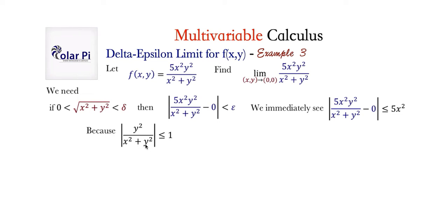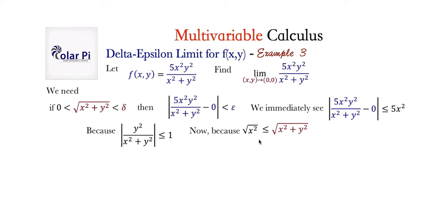This is true because the denominator x² + y² is either equal to or bigger than the numerator x², always. And that is why this inequality holds. We explained this thoroughly in the previous examples, so we won't repeat it here. Up to this point, this is looking very much like example 2.